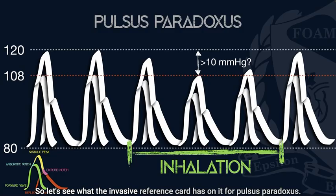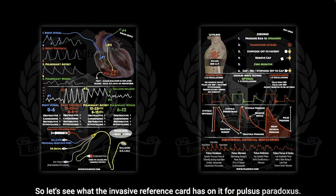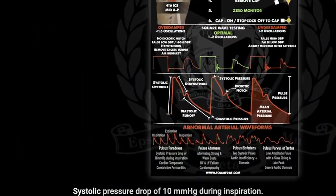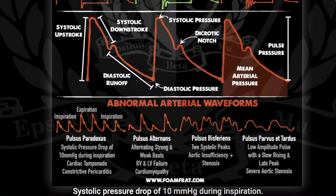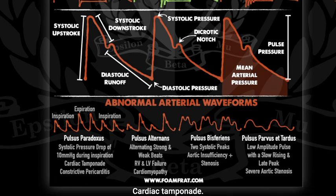Let's see what the invasive reference card has on pulsus paradoxus: a systolic pressure drop of 10 millimeters of mercury during inspiration. Causes include cardiac tamponade and constrictive pericarditis.